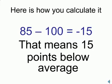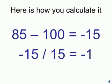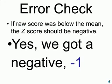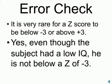That gives us a numerator of negative 15 — that means 15 points below average. We then take that negative 15 as our numerator, divide by 15, which is the standard deviation for our denominator, and that gives us a z-score of negative 1. That's one standard deviation below the mean. Error check: if the raw score was below the mean, the z-score should be negative — yes, we got a negative 1. And it's very rare for a z-score to be below negative 3 or above positive 3; yes, he is not below a z of negative 3.